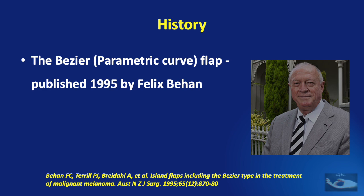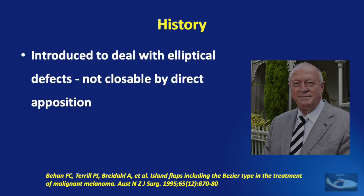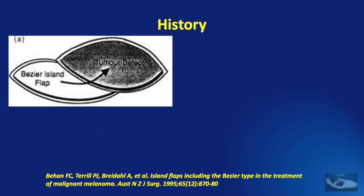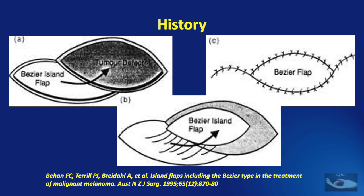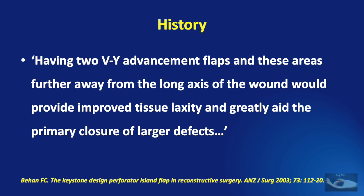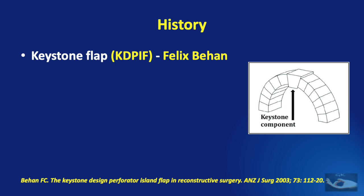The precursor of the Keystone Flap, the Bezier Flap, was first published in 1995 by Felix Behan from Australia. The word Bezier is French for parametric curve. It was introduced to deal with elliptical defects which were not closable by direct opposition. This flap is an elegant extension of the VY Advancement Principle — a slightly askew VY Advancement Flap planned to move into the defect and closed primarily. The Keystone Perforator Flap is a modification of this Bezier Flap, featuring two VY Advancement Flaps further from the long axis of the wound, providing improved tissue laxity to aid primary closure of larger defects. Felix Behan innovated this Keystone Design Perforator Island Flap in 2003.